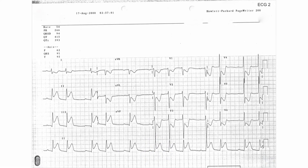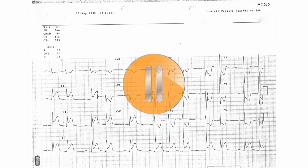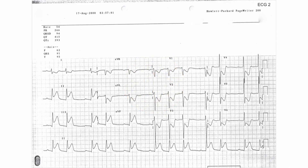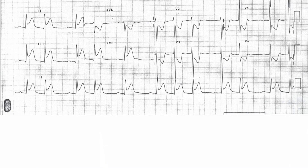This is an ECG recorded from a patient with chest pain. Pause this recording now and interpret the ECG on your own before pressing play again to hear the interpretation. The rate is 72 beats per minute. You'll notice that the computer has got this wrong.